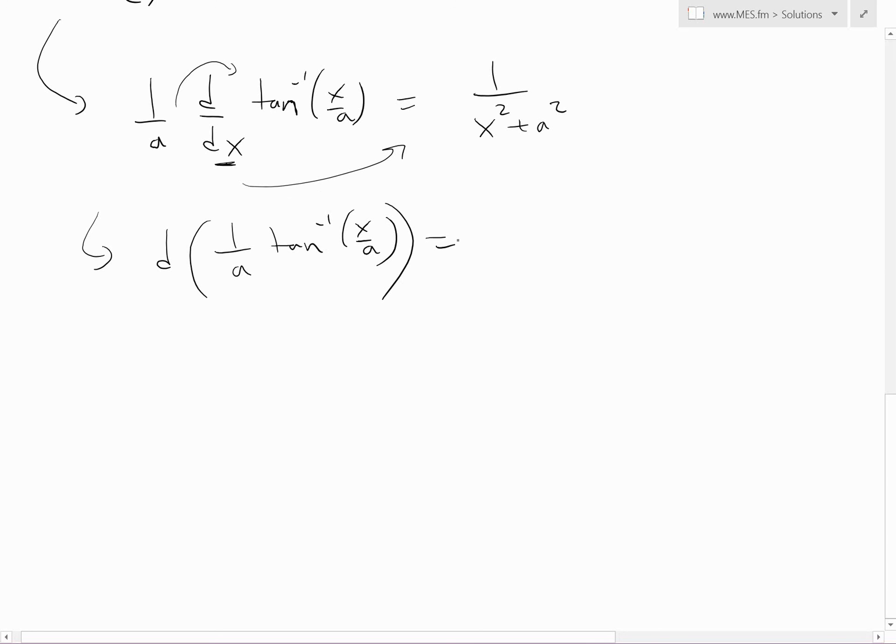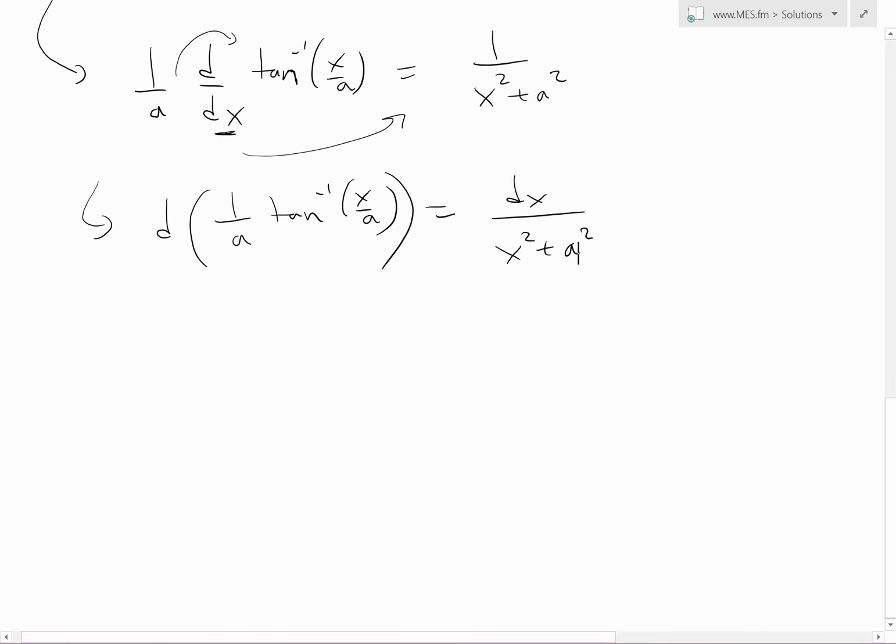Now we'll move this dx there. So we get dx over x squared plus a squared. This looks exactly like the function we're trying to do. If we integrate both sides and move this to the left side, that's what the identity looks like.